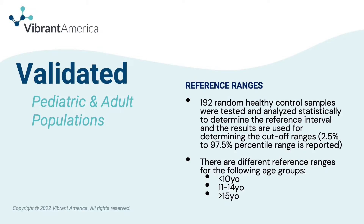Vibrant's neurotransmitter test is validated in both adult and pediatric populations. Their reference ranges are established based on different age groups. There are different reference ranges for individuals less than 10 years old, between 11 and 14 years old, and those over 15 years old. These reference ranges were established based on data from 192 random healthy individuals and establishing cutoff ranges based on those values.